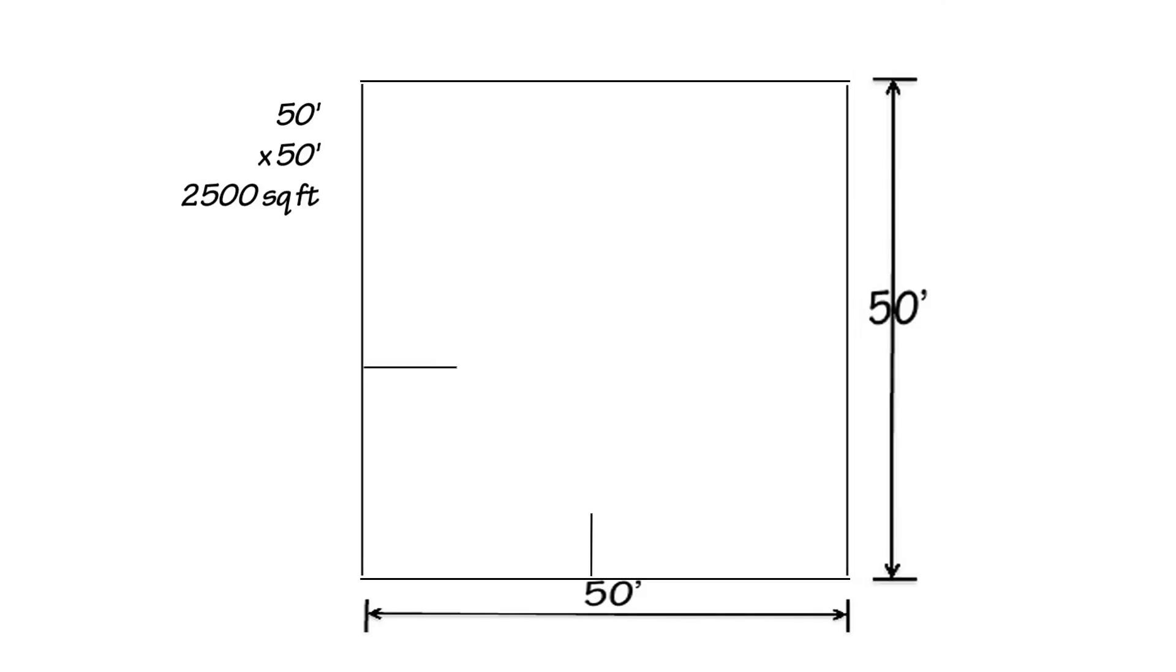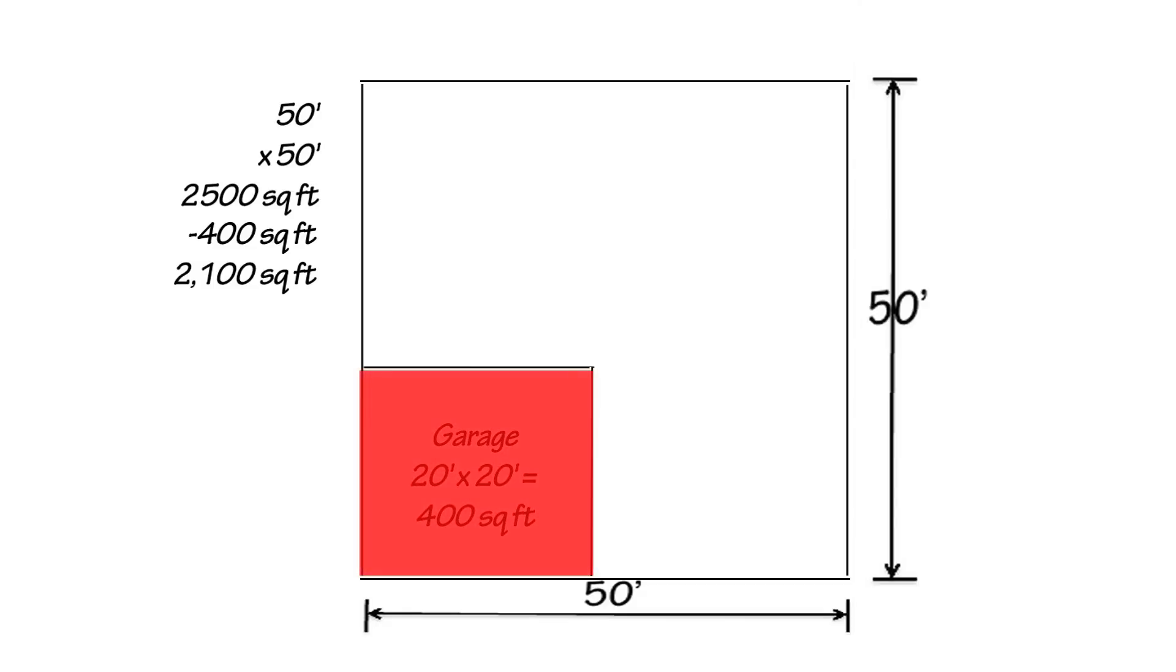In the next example, I take the same 50 by 50 home and we add a 20 by 20 garage, which is 400 square feet. When you subtract that 400 square feet from the 2,500 square feet, you have a 2,100 square foot home. According to ANSI, you do not count garage space as square footage of a home. So let's say hypothetically this home also costs $250,000. Now your cost per square foot is $119.